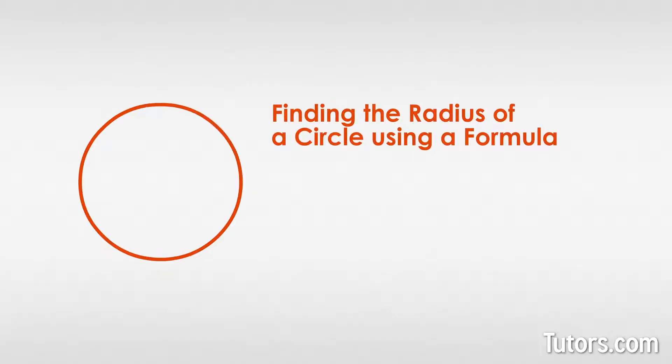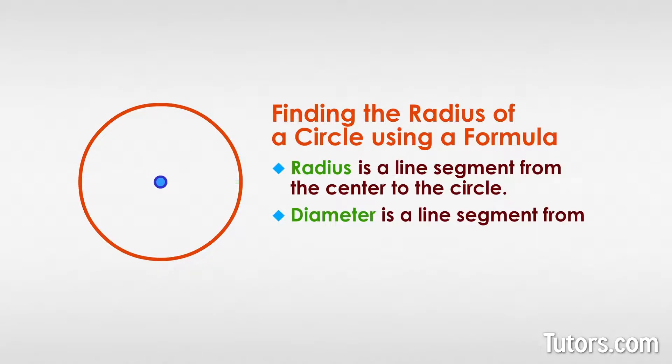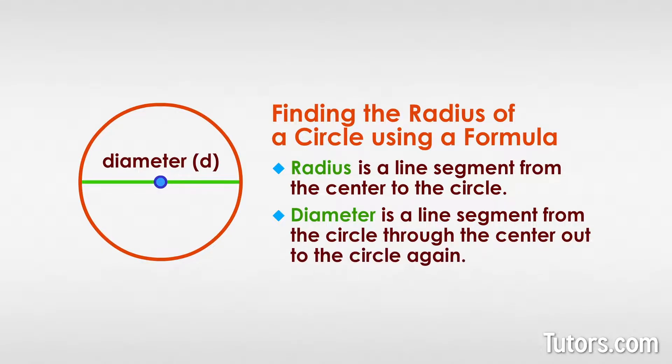Finding the radius of a circle using a formula. Since a radius is a line segment from the center to the circle and a diameter is a line segment from the circle through the center out to the circle again,